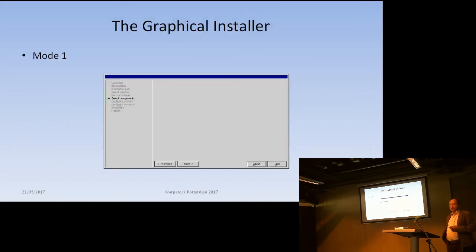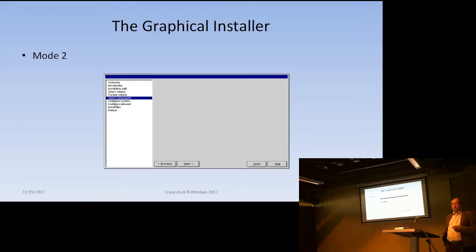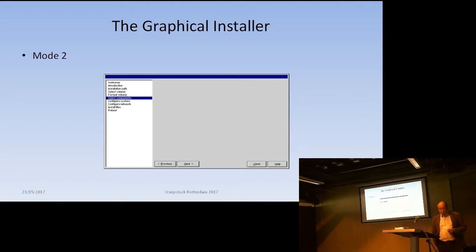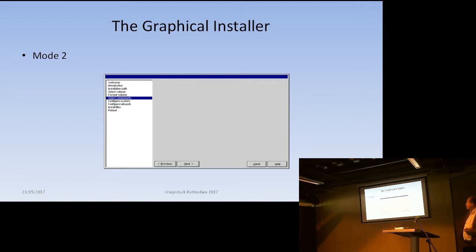For mode two, the left-hand panel becomes a navigable panel — we don't use this in the installer at the moment. Then we have mode three, which is even easier: just one big panel.